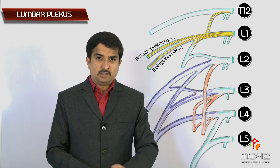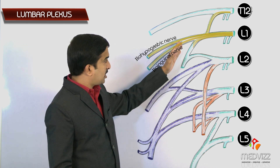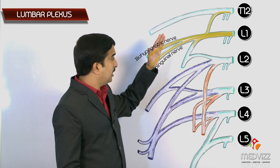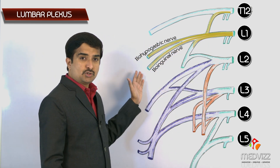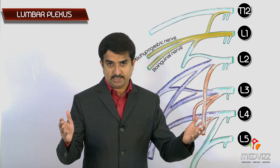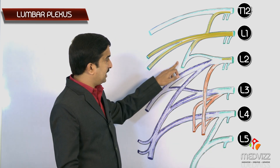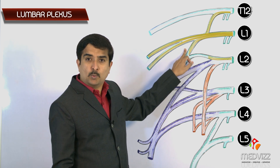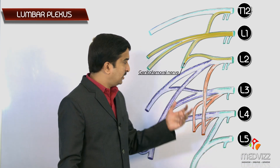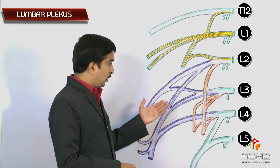L1 is divided into two branches: the larger upper branch and the smaller lower branch. The larger upper branch gives rise to the iliohypogastric and ilioinguinal nerves. The smaller lower branch of L1 joins with a branch from L2 to form the genitofemoral nerve.